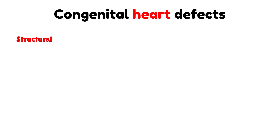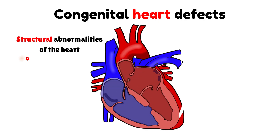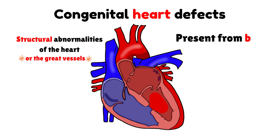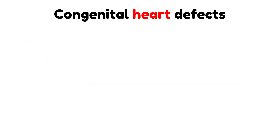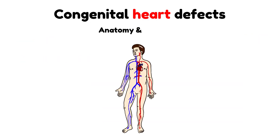Congenital heart defects refer to structural abnormalities of the heart, or sometimes of the great vessels, that are present from birth and disrupt the normal pattern of blood flow. However, to truly understand what congenital heart disease means, we must first recall the proper anatomy and physiology of the normal heart.